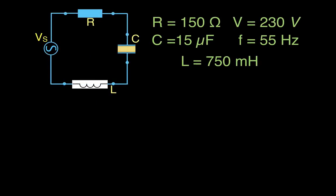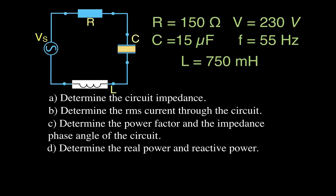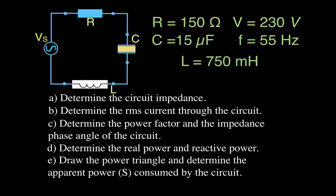This is the circuit we're going to be looking at. We have a circuit that has an alternating voltage source, a resistor, a capacitor, and an inductor. These are the values for those components, and we're going to do, hopefully in the next 10 minutes, the following things: determine the circuit impedance, the RMS current, the power factor and impedance phase angle, and the real and reactive power.